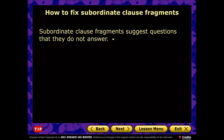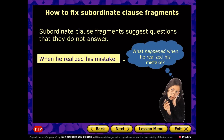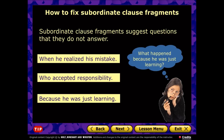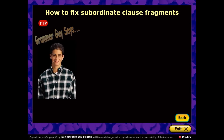The other type of fragment often seen in English, besides phrase fragments, is the subordinate clause fragment. Unlike a phrase, a clause does have a subject and a verb — but a subordinate or dependent clause fragment raises questions it doesn't answer. For example, 'When he realized his mistake.' We have subject 'he' and verb 'realized,' but the subordinating conjunction 'when' means we need an independent clause to complete it. Other examples: 'who accepted responsibility' and 'because he was just learning' — what happened? All of these are subordinate clause fragments.